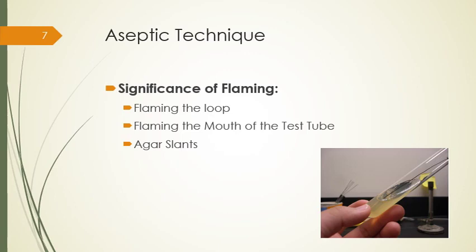When transferring a culture from a plate, cool the loop by touching it on the very edge of the agar. When transferring from a broth, the red-hot loop will make a sizzling noise as soon as you insert it into the culture. The loop will automatically cool once it makes contact with the broth culture, but wait one or two seconds before removing the loop full of inoculum from the tube.